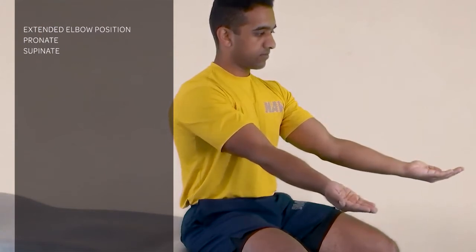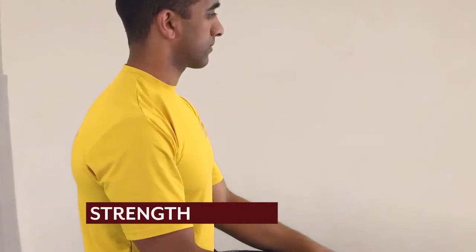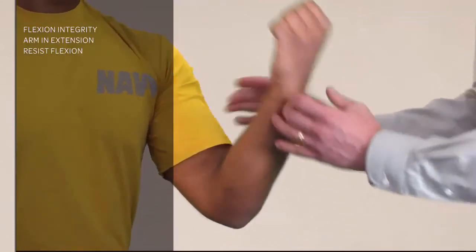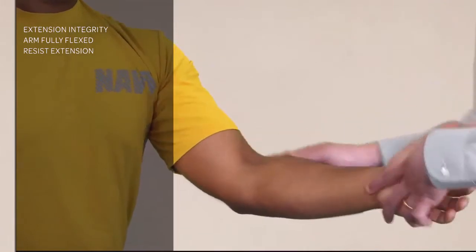That completes our inspection, palpation, and range of motion. Next we do strength testing. For strength testing, we test the integrity of flexion by resisting flexion, and then with the patient fully flexed, we resist extension. Then we do a hand grip.